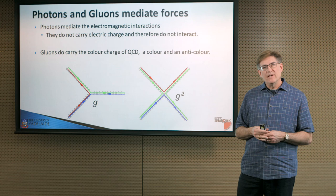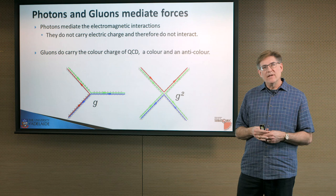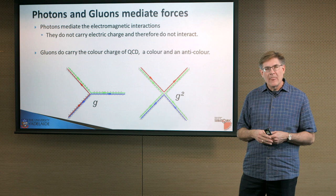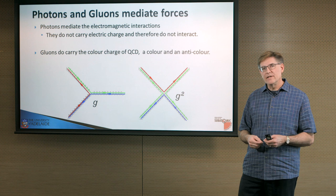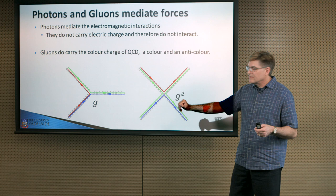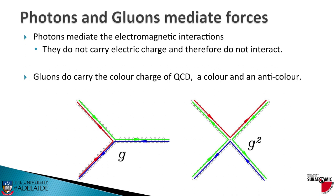Gluons do the same thing, but whereas photons don't carry the electric charge, gluons do. And as a result, gluons can directly interact with other gluons. And they can do that in two different ways. There's a diagram here on the left that shows a gluon coupling to two other gluons. On the right, we have a four-gluon interaction.